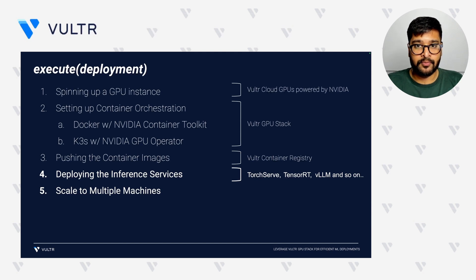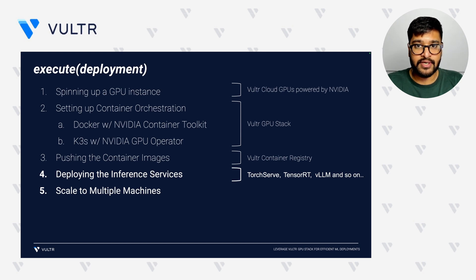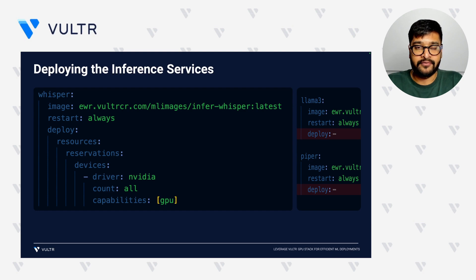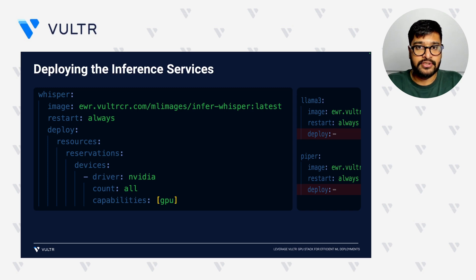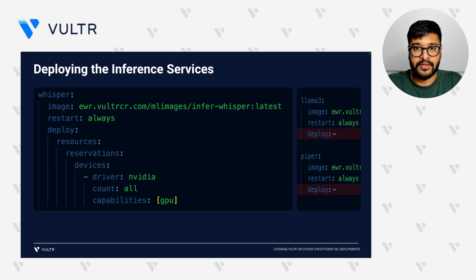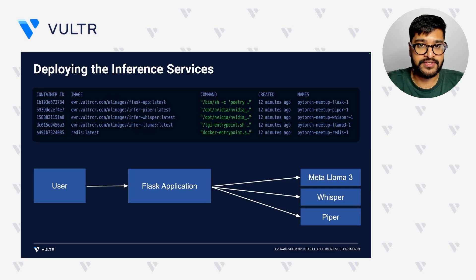With the initial steps completed, we are ready to deploy our actual inference services — this is where we make our models available for use in the application. We use Docker Compose to deploy our inference services. Here are the configurations for each of the machine learning models. Notice that we are providing GPU access to our containers so that our models can utilize the full power of GPUs for inference. Once deployed, you can see all containers running, including the inference services, the web application, and Redis for rate limiting and caching.